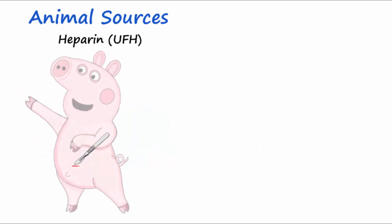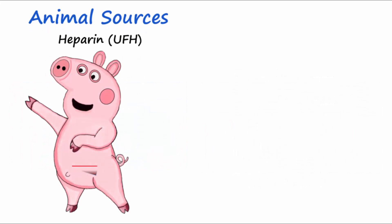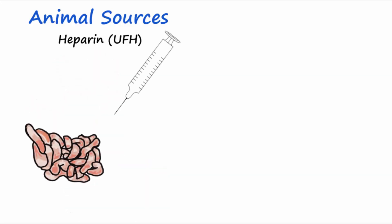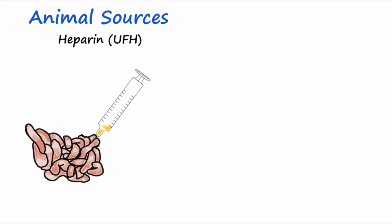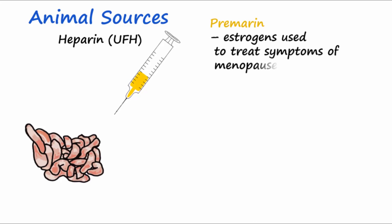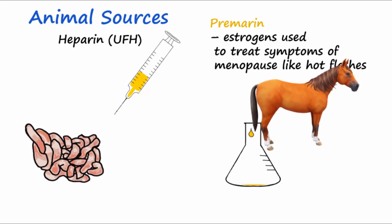Examples of drugs from animal sources include the anticoagulant heparin, or UFH, that is extracted from pig guts. Another example is Premarin, which contains estrogens used to treat symptoms of menopause like hot flashes. It is extracted from the urine of pregnant mares — hence the name Premarin, a shortened version of pregnant mare urine.